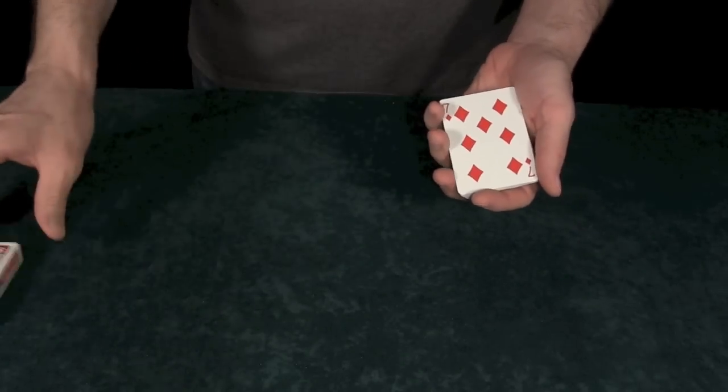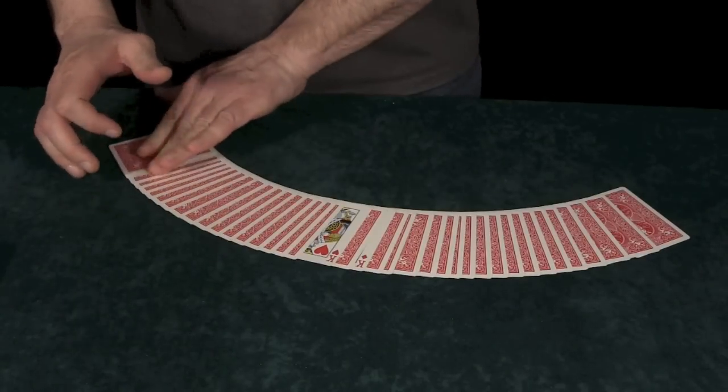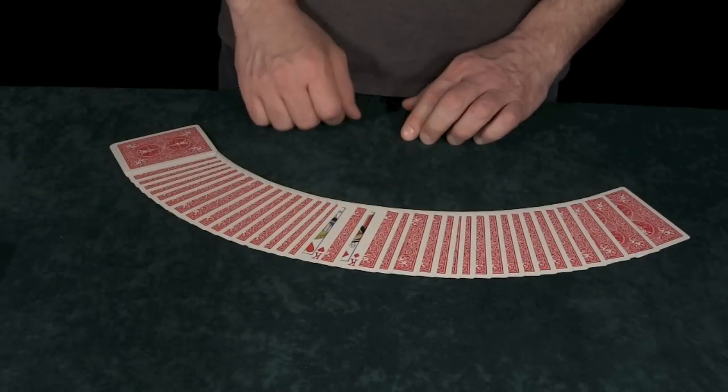You chose the seven of diamonds. But remember, before this trick started, the kings had already selected a card.